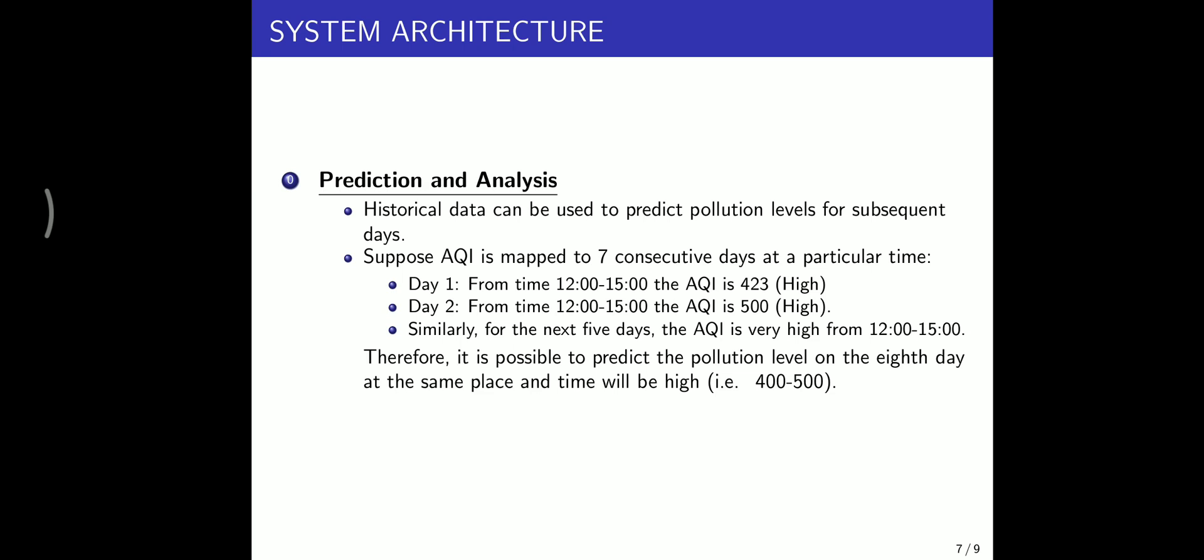Prediction and analysis. As mentioned earlier, the prediction algorithm we use is the decision tree algorithm. The algorithm was used because it gives us precise and most accurate data. Historical data can be used to predict pollution levels for subsequent days. Suppose AQI is mapped to 7 consecutive days at a particular time.